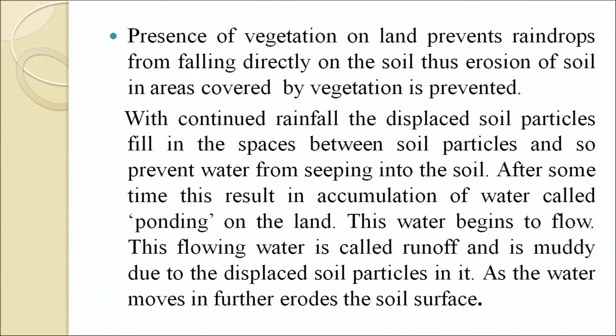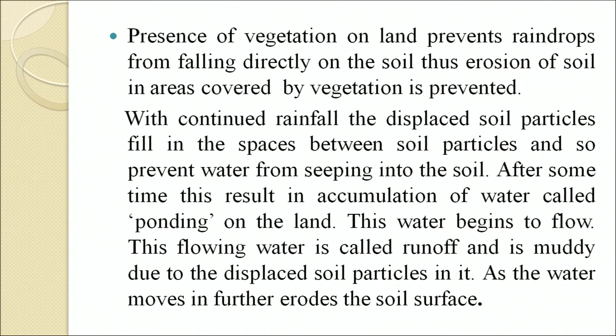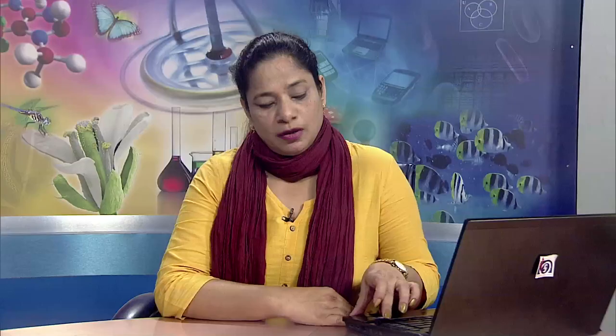After some time, this results in accumulation of water called ponding on the land. This water begins to flow, and is called runoff — it is muddy due to displaced soil particles in it. As the water moves it further erodes the soil surface. Sheet erosion is the detachment and transportation of soil particles by flowing rainwater, also called sheet or wash-off erosion. This is a very slow process and often remains unnoticed.